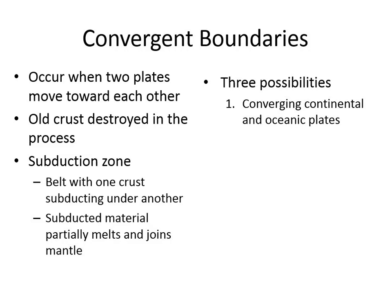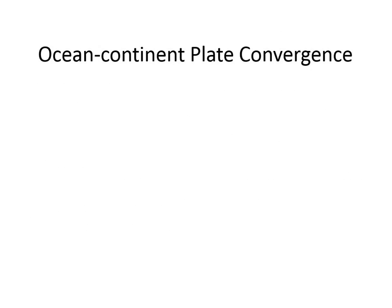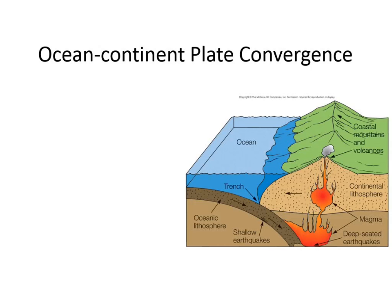Possibilities with regard to types of crust that are converging: we can have a continental and an ocean plate converging, two ocean plates converging, or two continental plates converging — each has a slightly different outcome. This first one is where you have an ocean crust being subducted by a continental crust. You kind of see the mountain building here and potential for volcanoes.